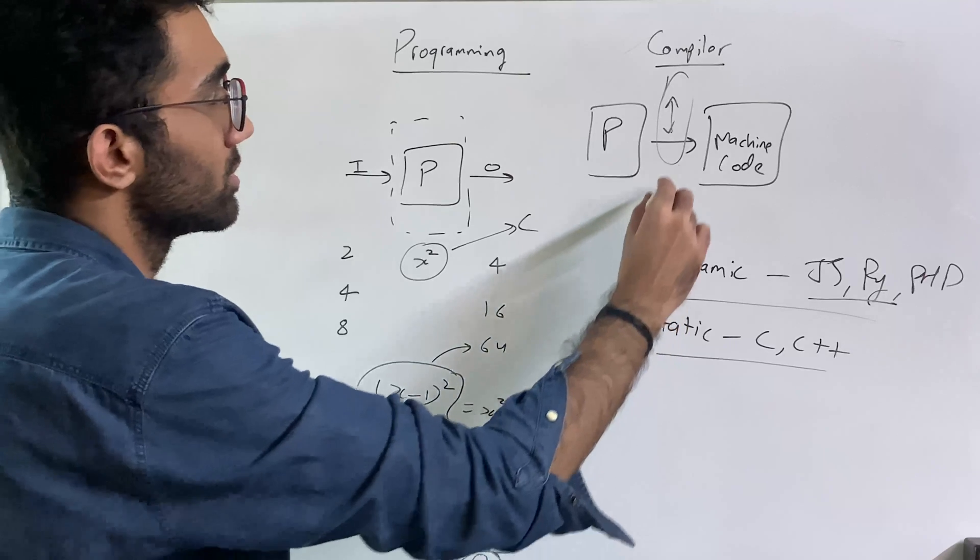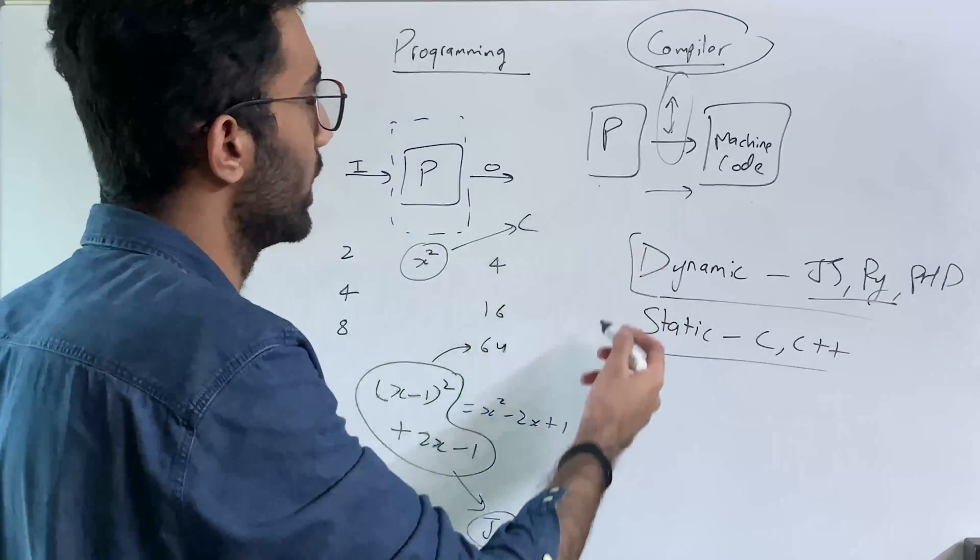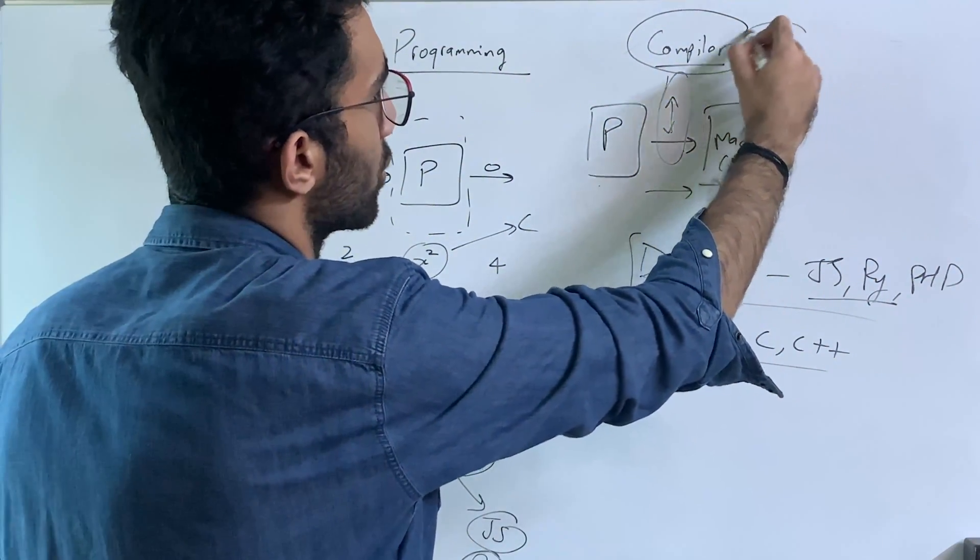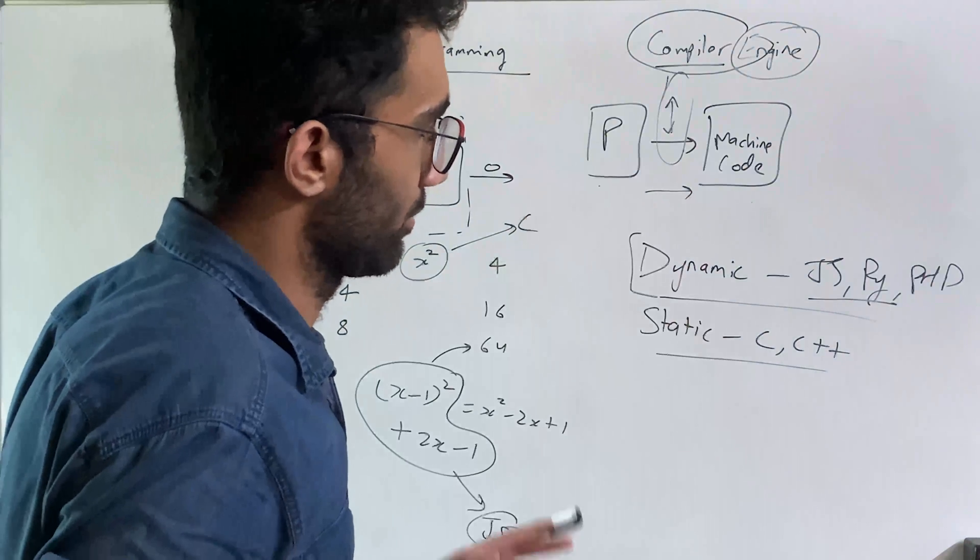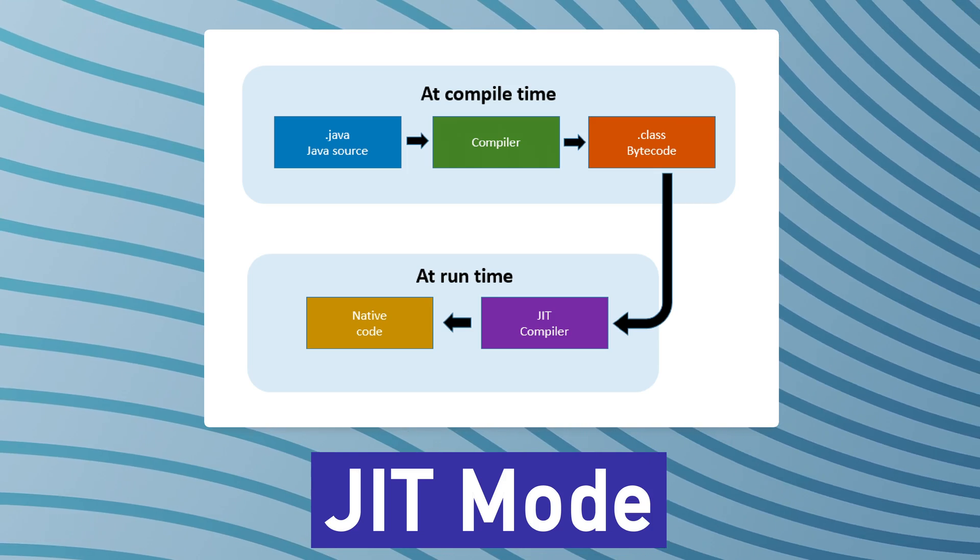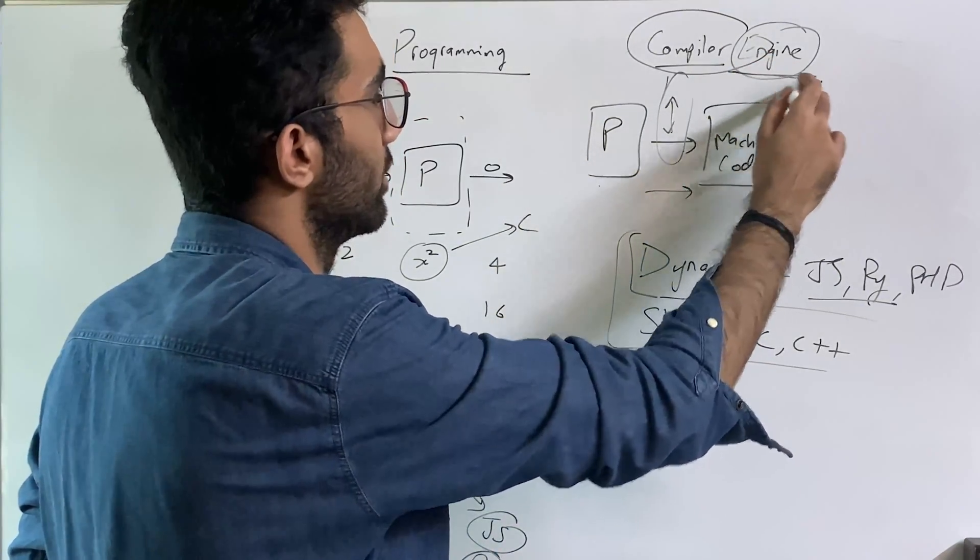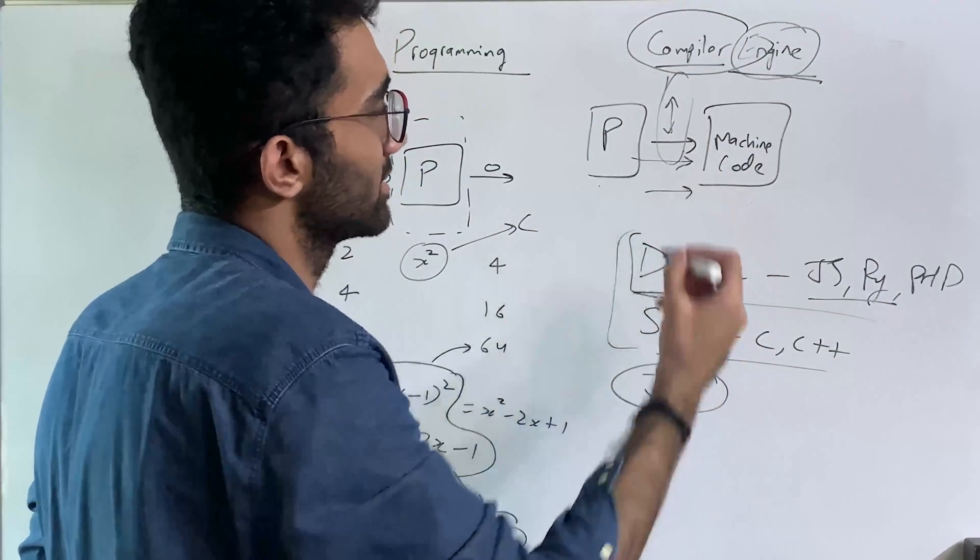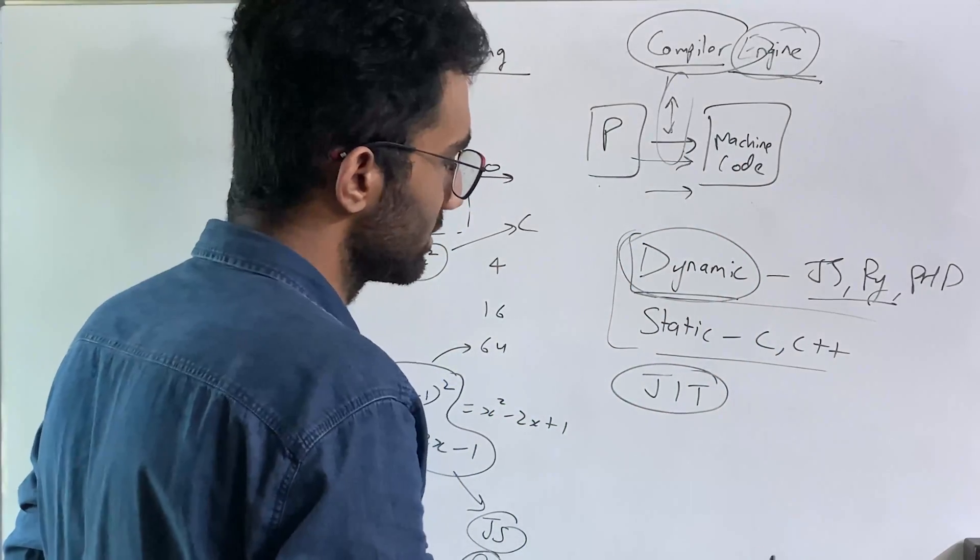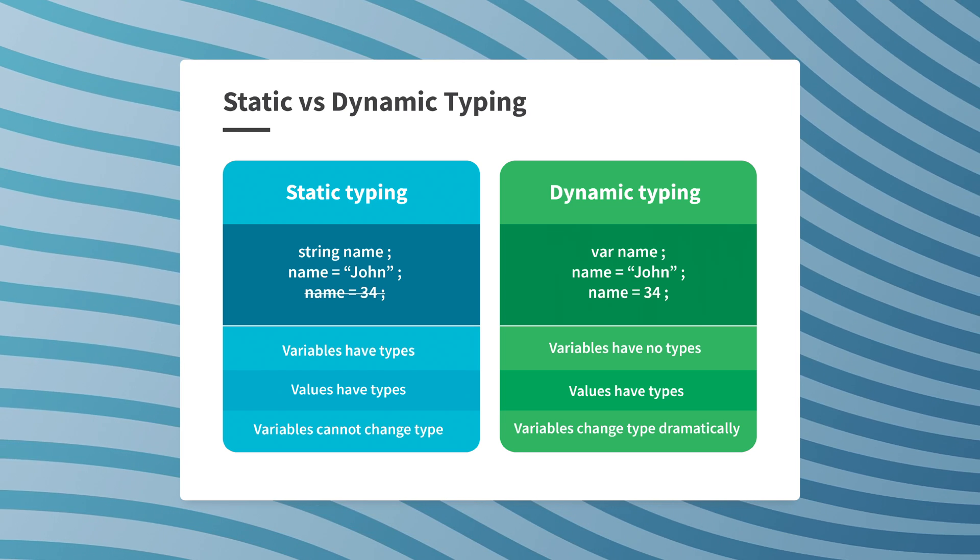The difference is dynamic languages do this compilation part from programming to machine code on the runtime. That means as and when the code is coming into the execution engine, this conversion happens on the runtime. The reason that is required is because dynamic languages are flexible in terms of data types. Your data types can be flexible.